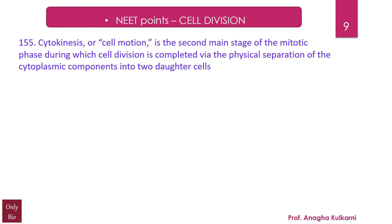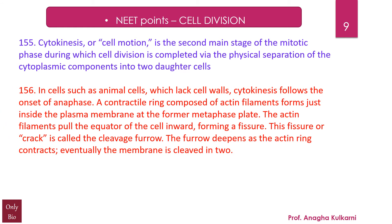Point number 155: Cytokinesis, or cell motion, is the second main stage of the mitotic phase, during which cell division is completed via the physical separation of cytoplasmic components into two daughter cells. In animal cells, which lack cell walls, cytokinesis follows the onset of anaphase. A contractile ring composed of actin filaments forms just inside the plasma membrane at the former metaphase plate. The actin filaments pull the equator of the cell inwards, forming a fissure called the cleavage furrow. The furrow deepens as the actin ring contracts, eventually cleaving the membrane into two.